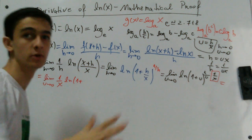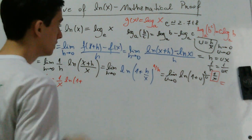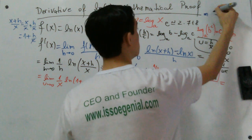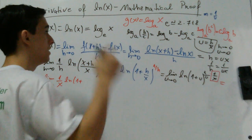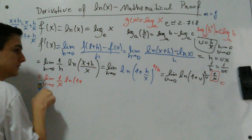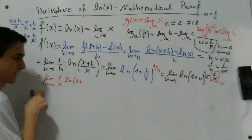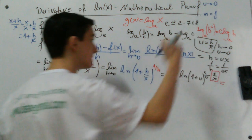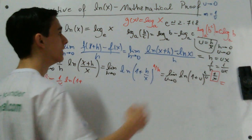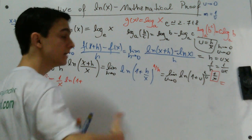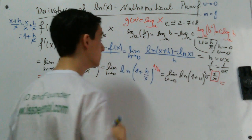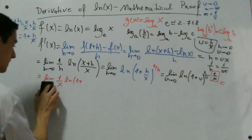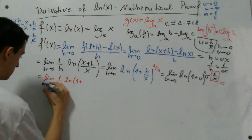Let's create another variable, m, where m equals 1 over u. We need to evaluate the limit as u approaches 0. When u becomes smaller and smaller, this division becomes larger and larger, so when u approaches 0, m approaches infinity. Instead of u approaching 0, we put m approaching infinity, and since u = 1/m, we replace 1 plus u with 1 plus 1 over m, and the exponent 1 over u becomes m.